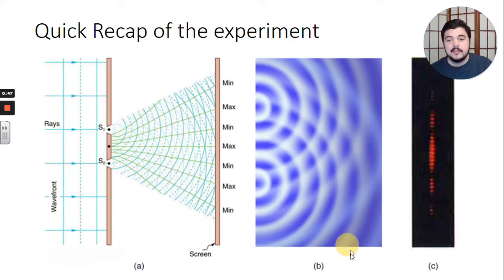Quick recap of the experiment. Figure A here is a schematic of the experiment. We have incoming parallel light rays that hit two slits. Those two slits allow the light waves to diffract and bend around the barrier. And the result of that bending around the barrier can be seen in figure B, where we have these two circular light waves that come out.